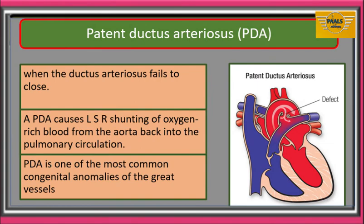Next is patent ductus arteriosus. This occurs when the ductus arteriosus, a connection between the left pulmonary artery and aorta, fails to close. Normally, the ductus arteriosus functionally closes within a few hours after birth through smooth muscle contraction and will eventually form the ligamentum arteriosus. This defect causes left to right shunting of oxygen-rich blood from the aorta back into the pulmonary circulation.